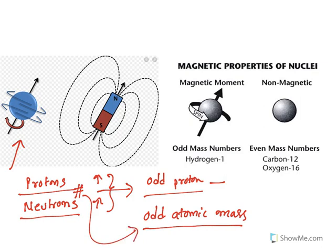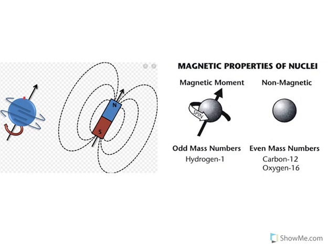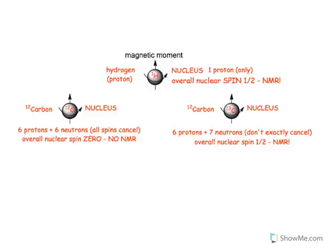The nucleus has a proton with a positive charge. Any spinning charged particle creates a magnetic field. So when the nucleus spins, it acts like a bar magnet — it exhibits a dipole moment with north and south poles. Similar to a bar magnet, the spinning charged nucleus has a magnetic field, and this is quantified by the magnetic moment. This is the magnetic property of the nucleus.